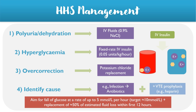It's important to aim for a fall of glucose at a rate of around 5 millimoles per litre per hour, and not any higher than this, as this can risk some electrolyte abnormalities. Another target is to aim for a replacement of around 50% of the estimated fluid loss within the first 12 hours, as dehydration is the main risk factor in this patient group.